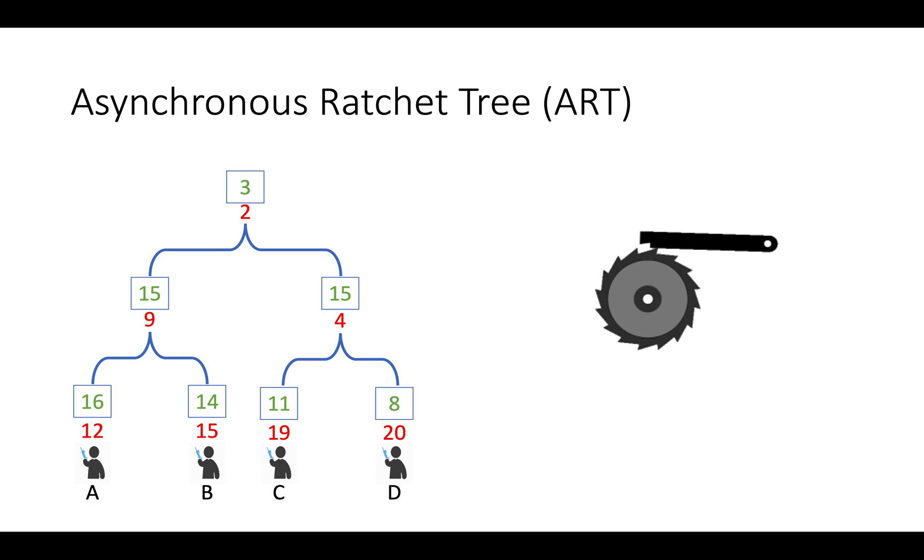You can clearly see that child can able to derive secret of parent node. But if parent node want to derive secret of child then there is no way. So, this tree has only upward path, no downward path.